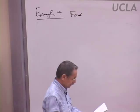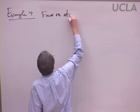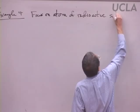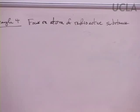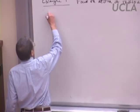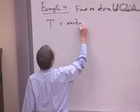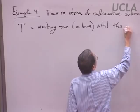A different sort of example: we somehow managed to focus our attention on a particular atom of a radioactive substance, like a radium atom. Radium atoms will decay sooner or later, but there's a waiting time involved. We've used the letter W already, so let's call this random variable T — T for time — the waiting time in hours until this atom decays.